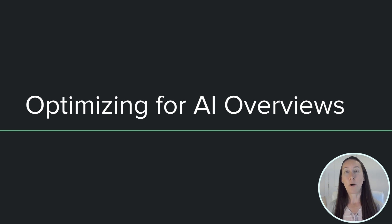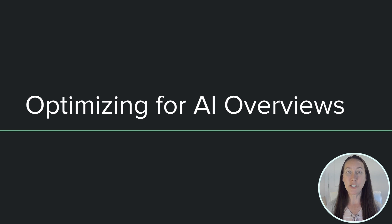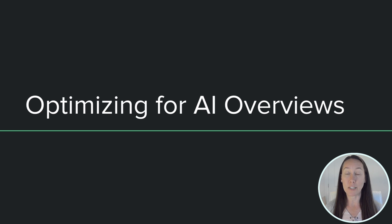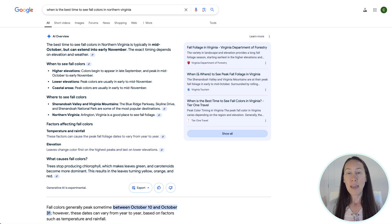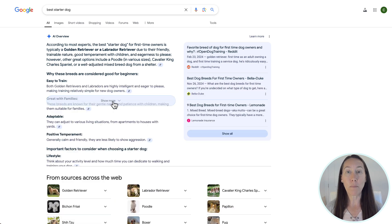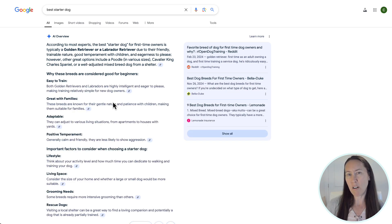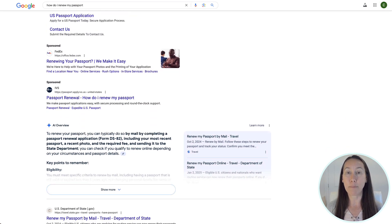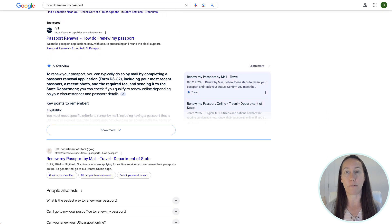These AI overviews appear in Google search results when Google determines that a generative response would be helpful for the searcher, pulling in information from various sources and from Google's knowledge graph. We've been seeing these pop up in different formats — from many articles, step-by-steps, tables, and other formats.